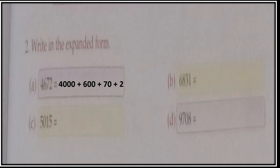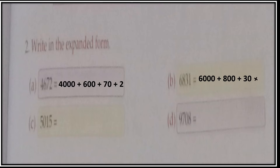Now see Part B — 6, 8, 3, 1. 6 is at the thousands place so its place value is 6,000. Then 8 has place value 800. Then 3 has place value 30. And 1 has place value 1 only. So you write: 6,000 + 800 + 30 + 1.